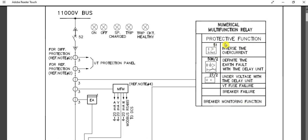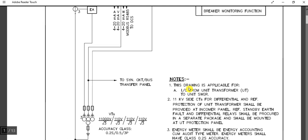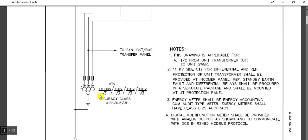This numerical multi-function relay receives current signal from the current transformer, and also requires VT (voltage transformer) or PT input for voltage measurement. So one input is the current signal from the CT, and another is the voltage signal from the VT. This VT has one primary side winding and three secondary side windings.